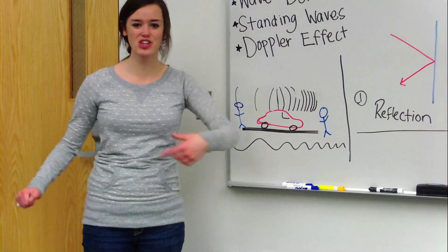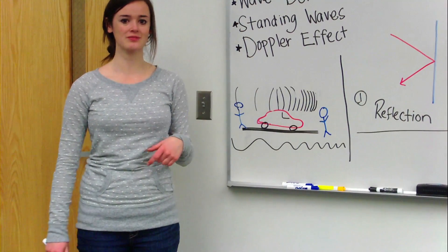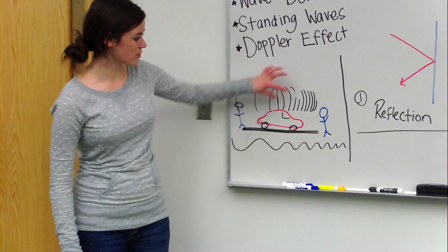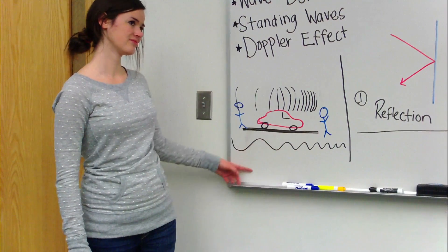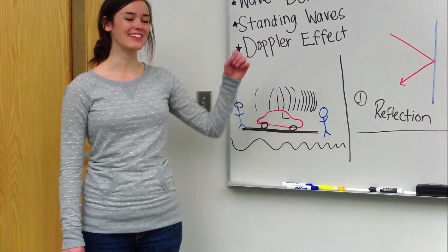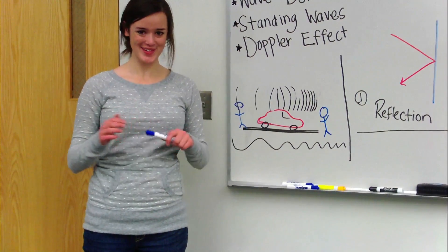And so, if you are at a race, and a race car travels past you, it's going to have a really high frequency, and then after it passes with the big wavelength, it's going to have a low frequency, making that lower pitch.